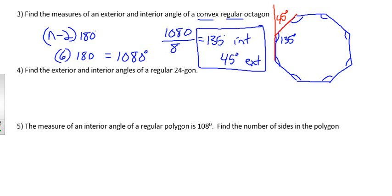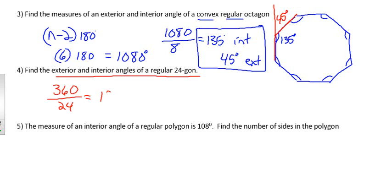Problem 4: find the interior and exterior angles of a regular 24-sided polygon. This time I'll start with exterior angles. The sum of exterior angles is always 360, so dividing by 24 gives 15 degrees per exterior angle. Then the interior angle is 180 − 15 = 165 degrees.